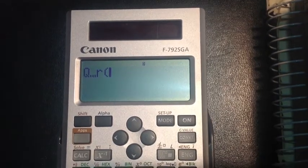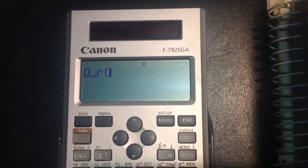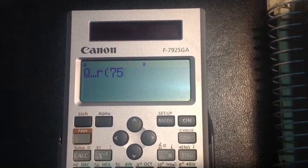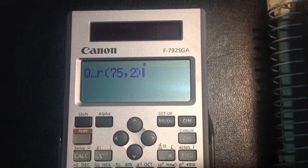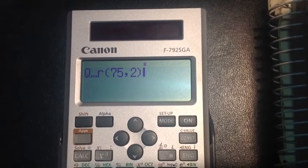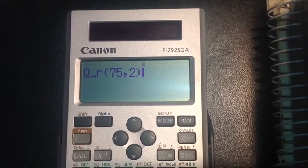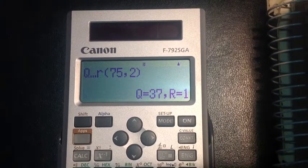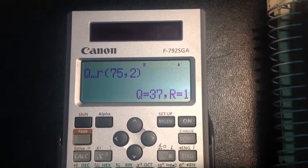And QR is a division function, which will tell you both the quotient and the remainder. So if I was to divide 75 by 2, for example, I get a quotient of 37, a remainder of 1.